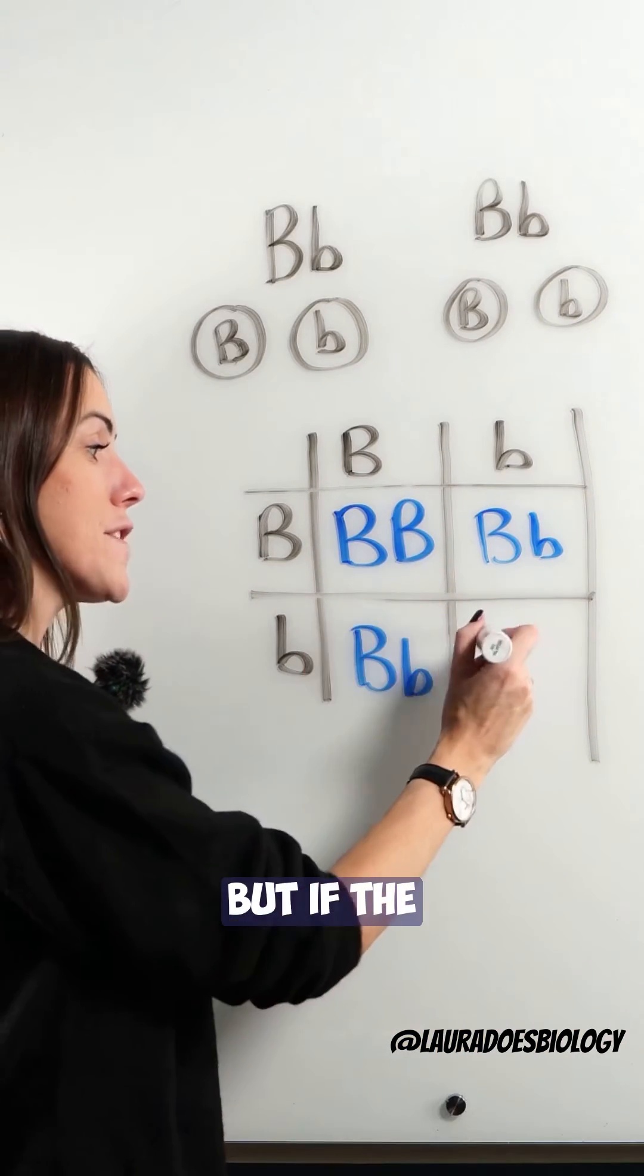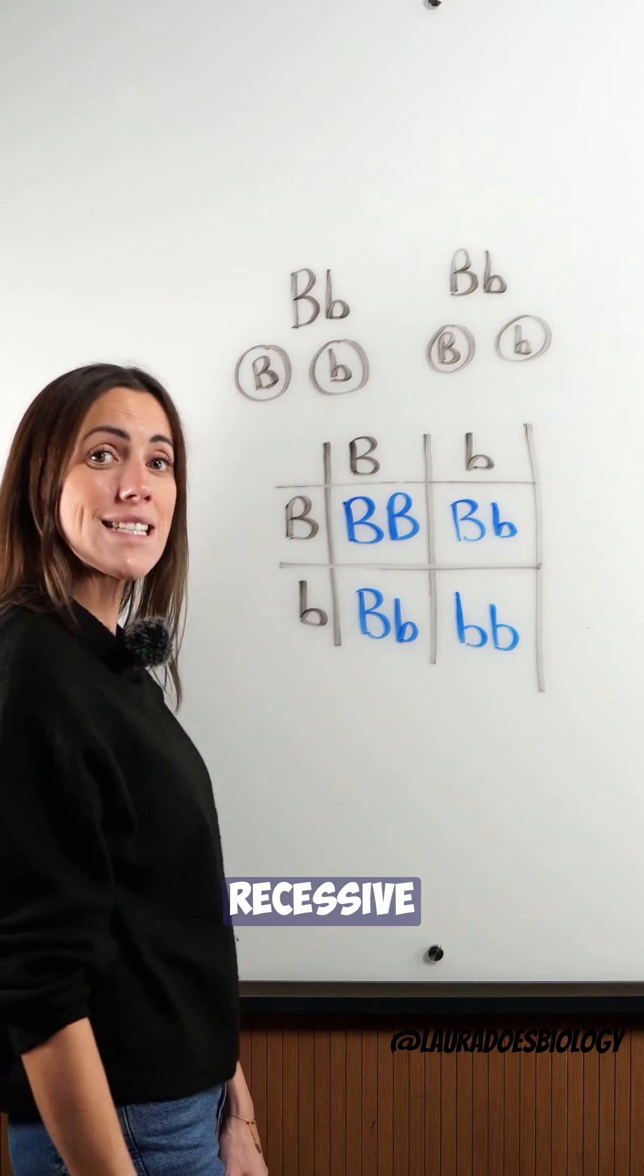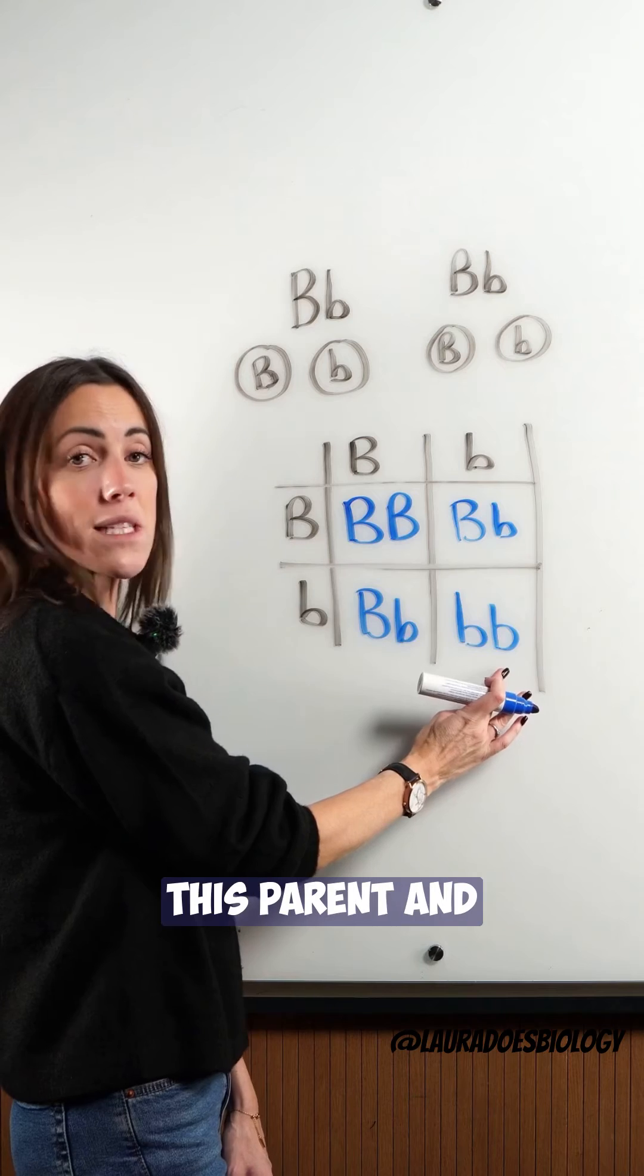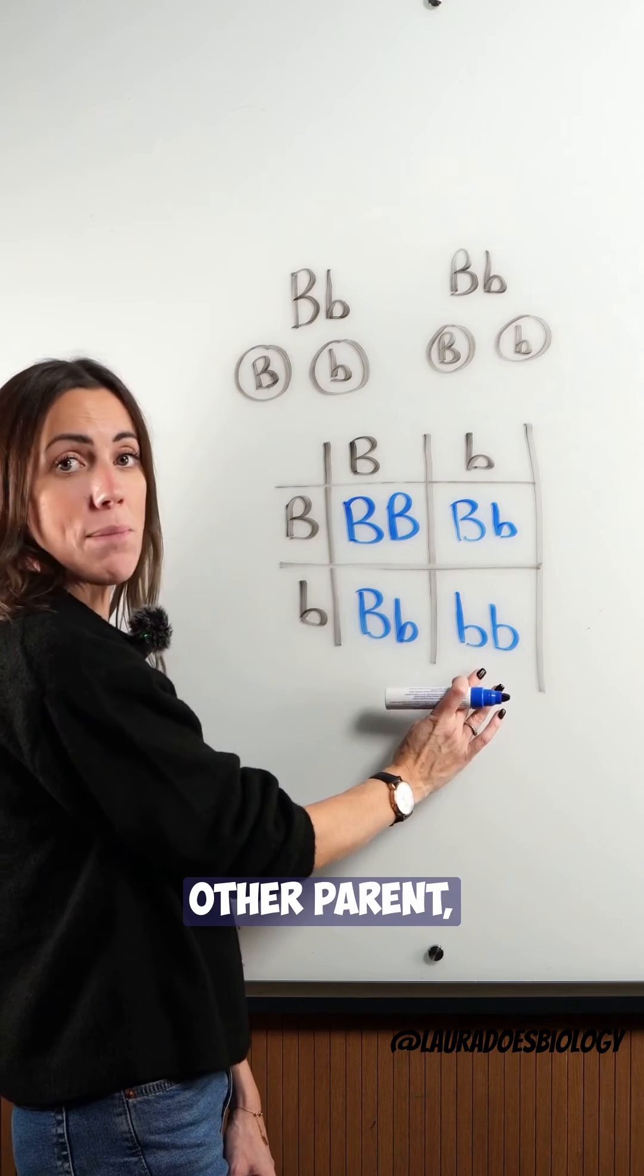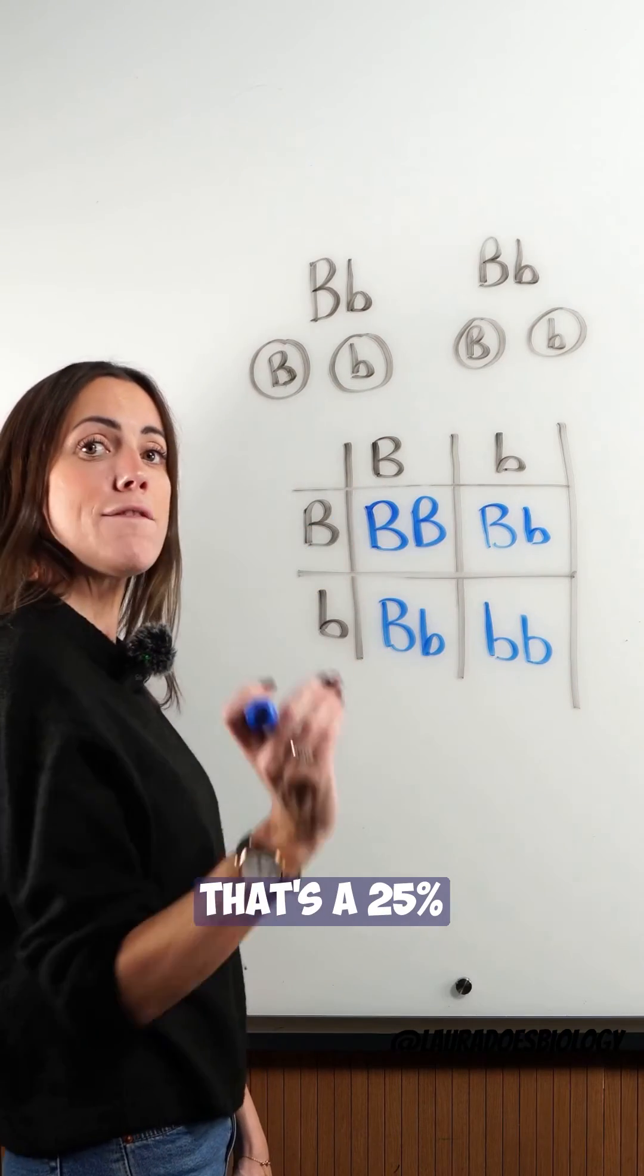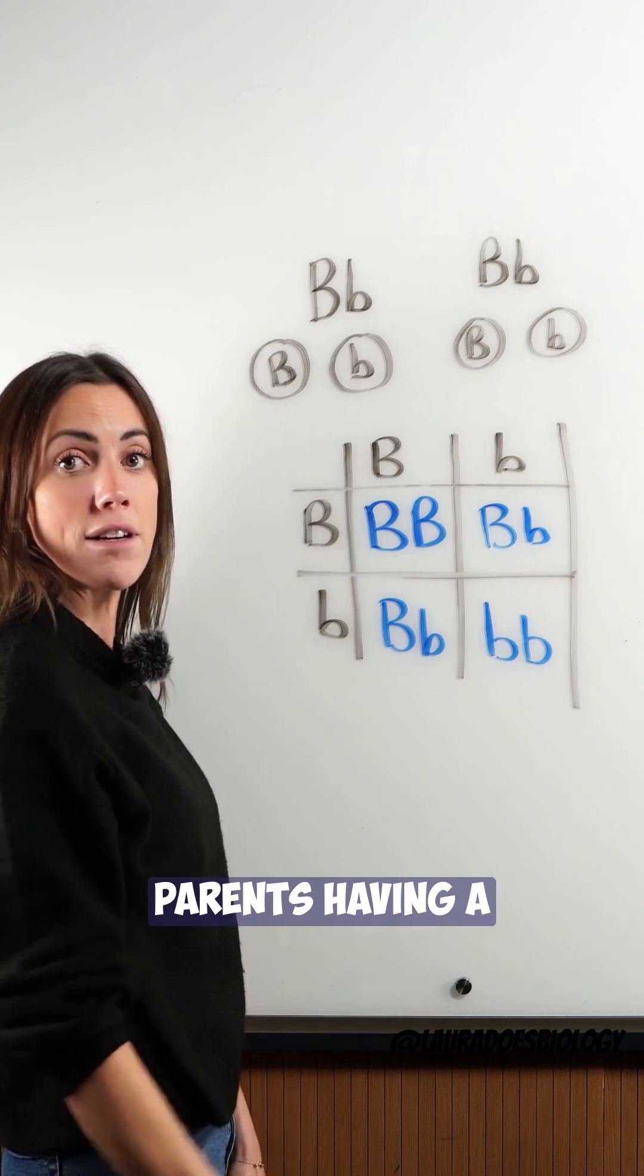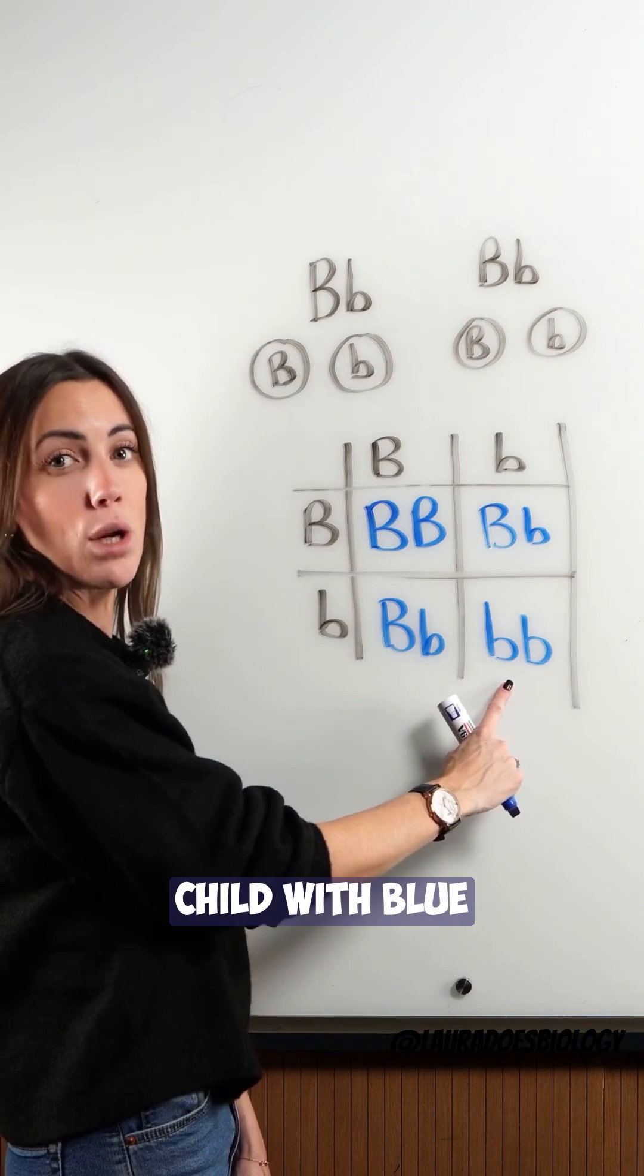But if the child inherits both of the recessive alleles, one from this parent and one from the other parent, this child will have blue eyes. That's a 25% chance of these two brown-eyed parents having a child with blue eyes.